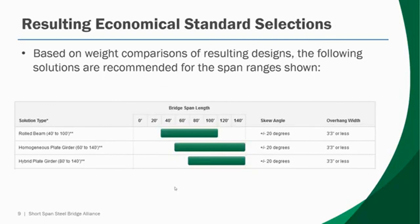Based on these weight comparison studies, the following solutions are recommended and reported in ESPAN, as you'll see in part two. For example, if you input a project with a span length of 60 feet, you'll get solutions for both rolled beams and plate girders. However, if the span length is 130 feet, ESPAN will not generate a rolled beam solution, as rolled beams are not efficient for span lengths of that magnitude. Similarly, for a very short span like 40 feet, you won't get a plate girder solution. These ranges serve as very useful general guidance for bridge engineers.